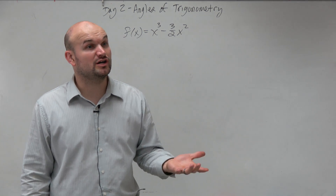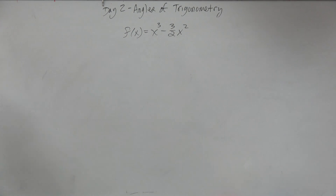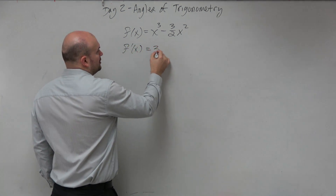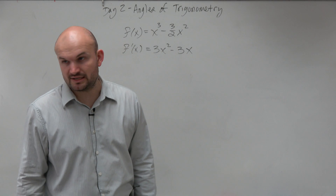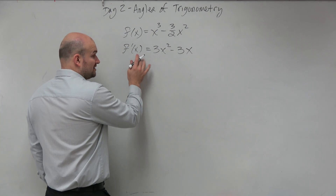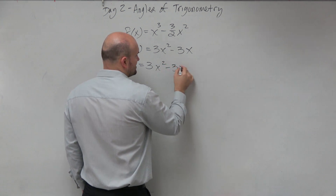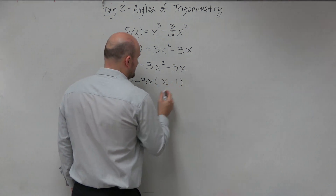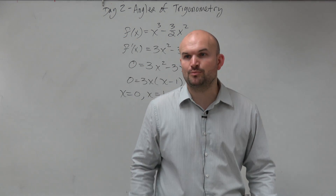The next thing we want to do is find our critical values — making sure we're finding critical values that are in the domain. To find our critical values, I'm going to use the derivative, which is 3x squared minus 3x. To find the critical values, I'll set this equal to 0: 3x squared minus 3x. I can factor out 3x, and I'm left with x minus 1. Therefore, my critical values are x equals 0 and x equals 1.